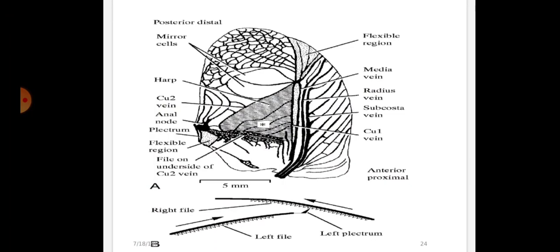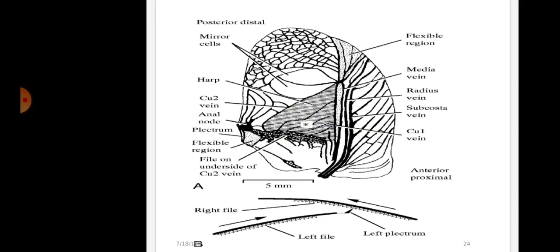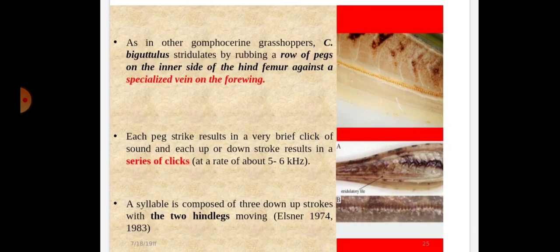As in Gomphocerinae grasshoppers, they stridulate by rubbing a row of pegs on the inner side of the hind femur against a specialized vein on the forewing. Each peg strike results in a very brief click of sound, and each up or down stroke results in a series of clicks. A syllable is composed of three down-up strokes with the two hind legs moving.